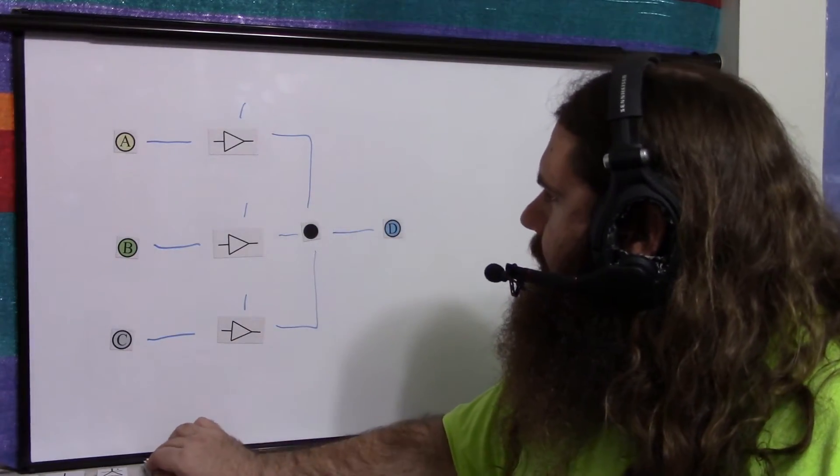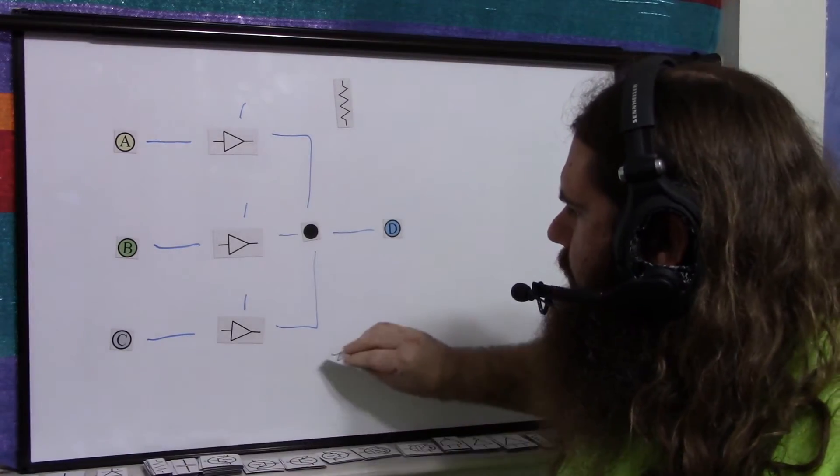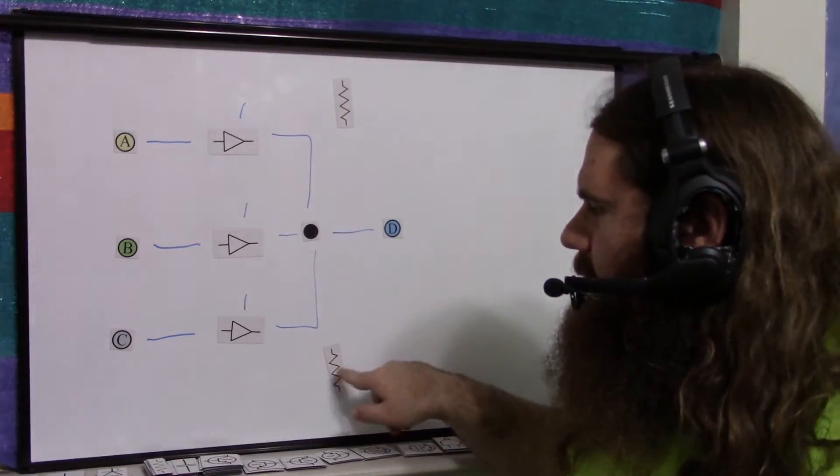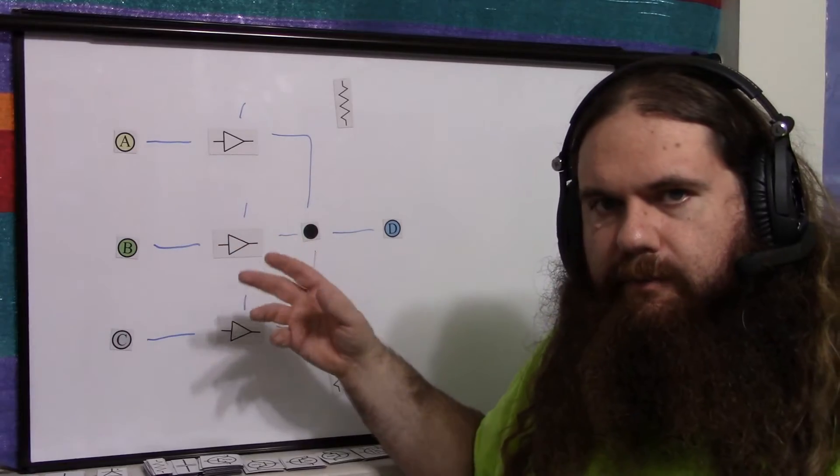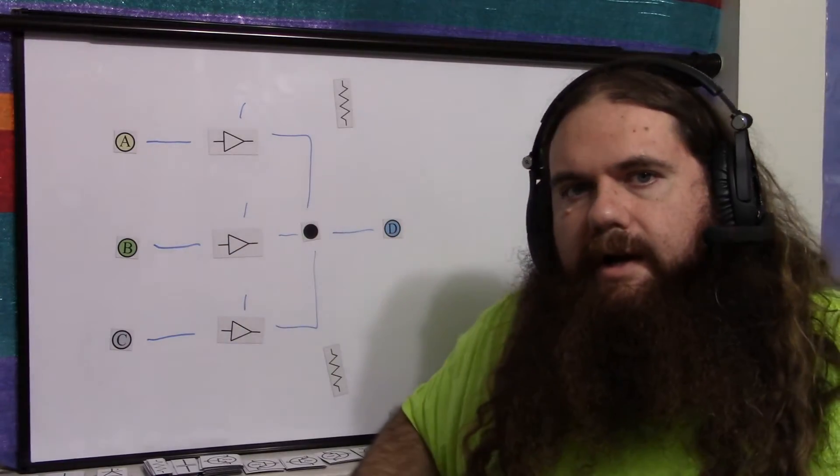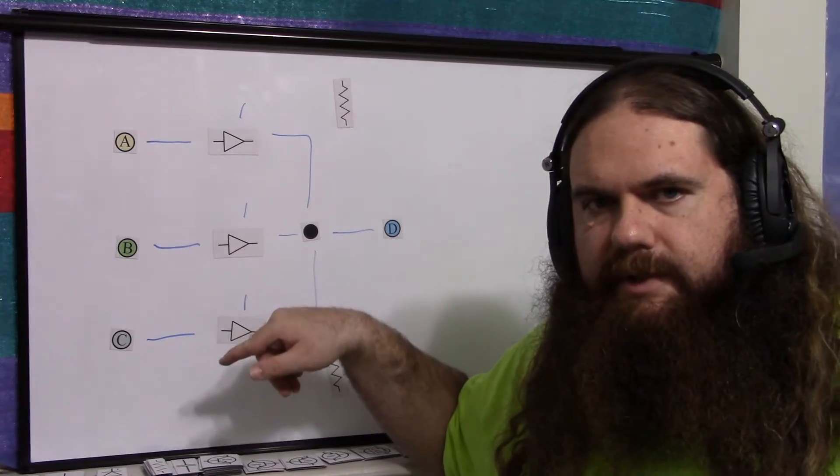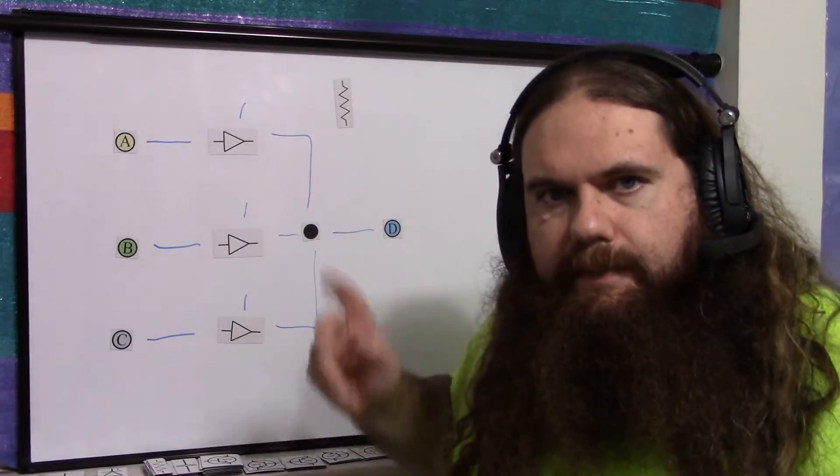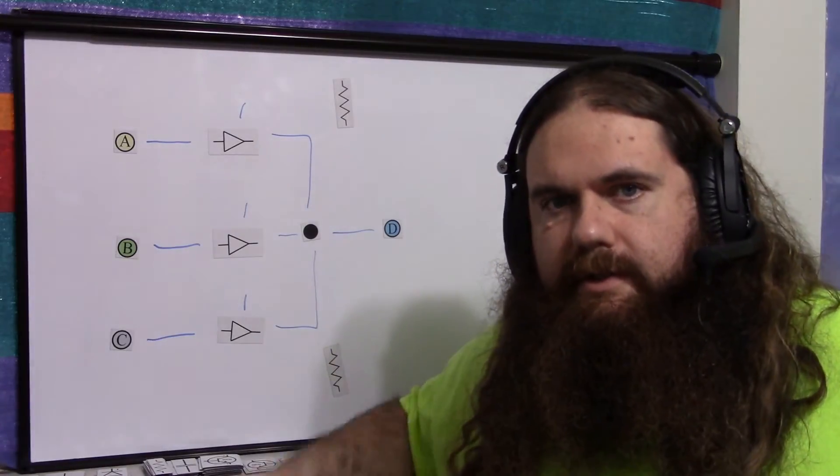You could, of course, have a pull-up or a pull-down resistor. So if you had none of them on, then it would pull up or pull down. And then if one of them is on, it would override and be perfectly fine. But if you always know that one of them is going to be on at a time, then you don't need to pull up or pull down. And that's really all there is to it.